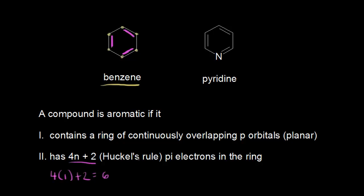Just to remind you, n can be equal to 0, 1, 2, 3, or any other whole number. That's called Hückel's rule. You need Hückel's rule pi electrons in the ring for a compound to be aromatic.